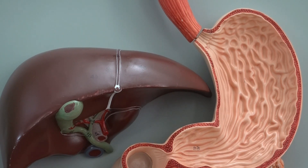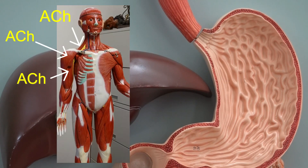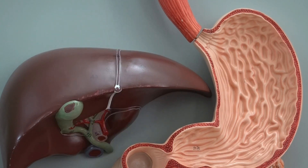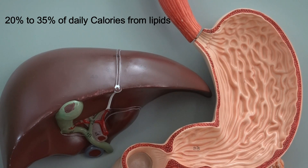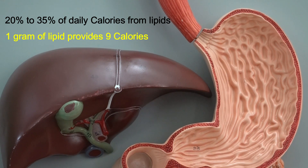Acetylcholine has many important activities in our body — for example, it is the neurotransmitter released from somatic motor nerves to stimulate our skeletal muscles, so our voluntary body movement depends on the release of acetylcholine. The recommendation for Americans is that 20 to 35 percent of our daily calorie intake should come from lipid, so it is important to note that we must have lipid, within balance, in our diet.